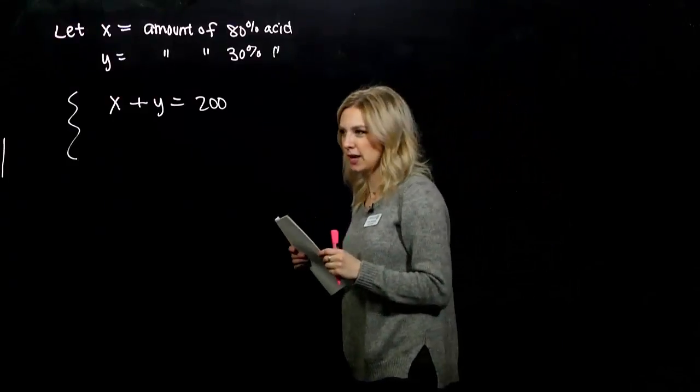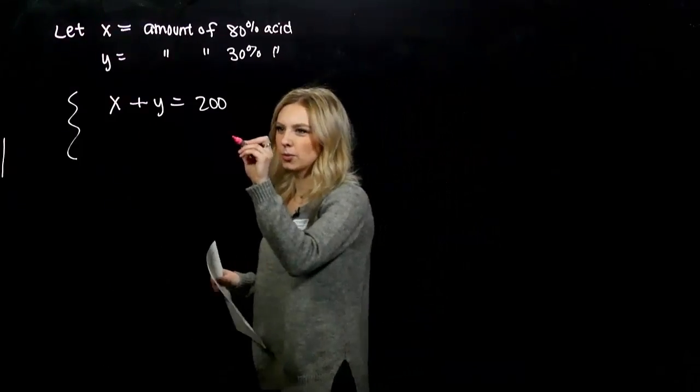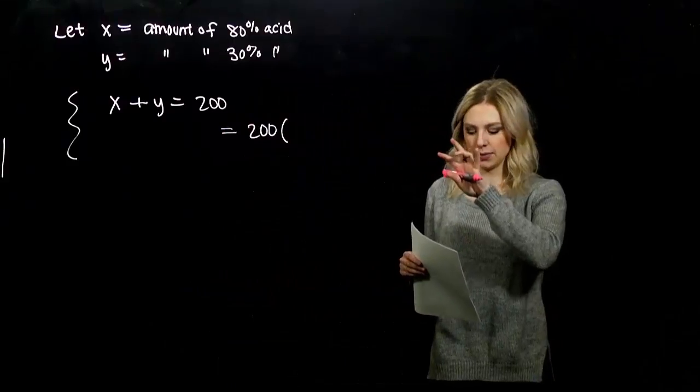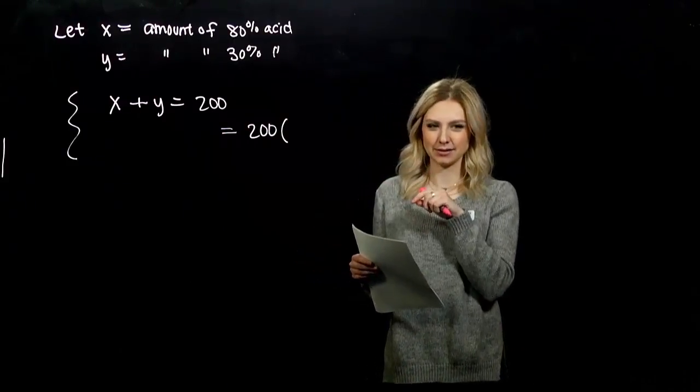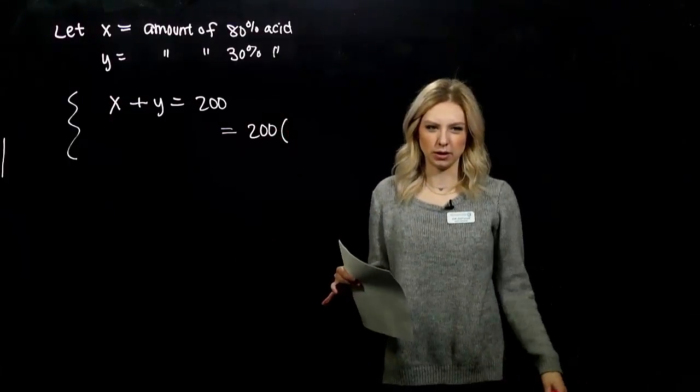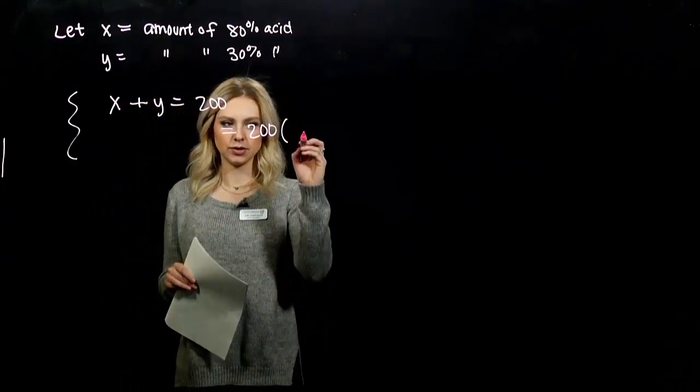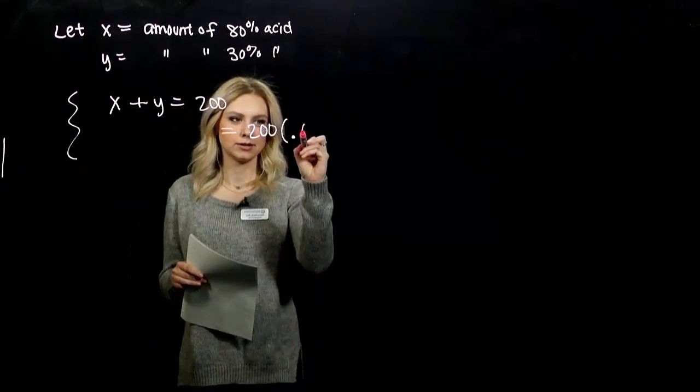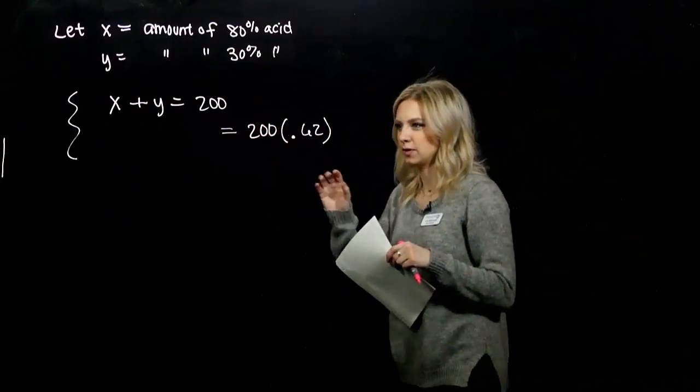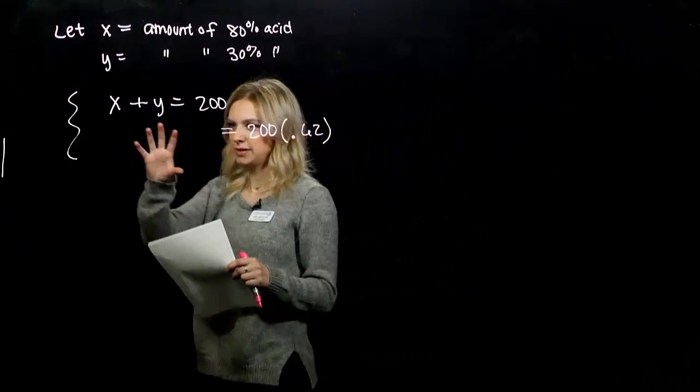Next we have to determine our acidity. In total we need it to be 62% acid. So I've got 200 liters, and I know that mixture is 62% acid. If I want to figure out the total amount of acid, 62% of 200 will give me the amount of acid involved. As a decimal, 0.62 times 200.